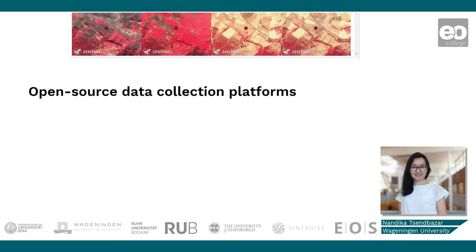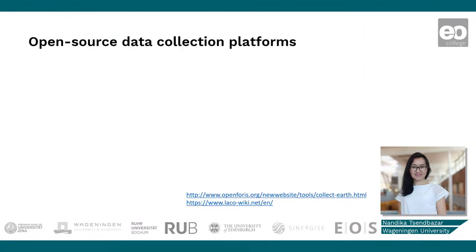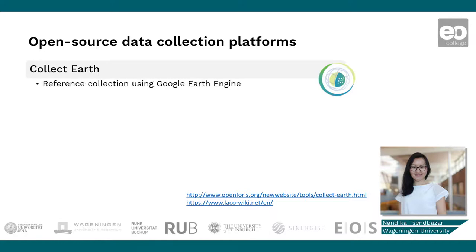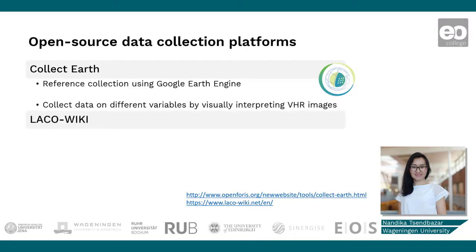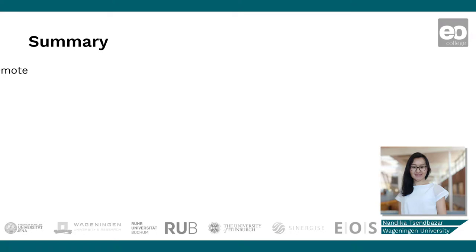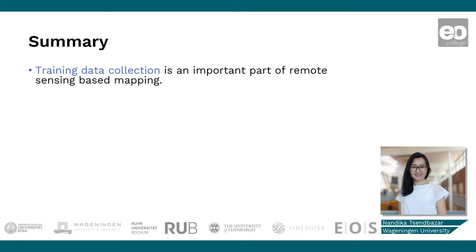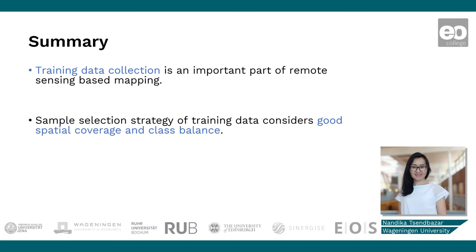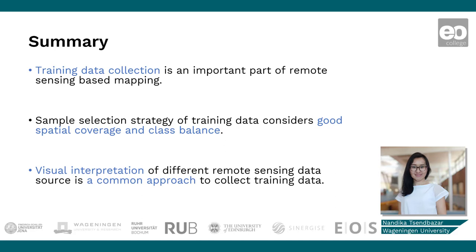There are also open source platforms that give easy access to different remote sensing data that can be used for interpretation. For example, the Collect Earth platform gives access to very high resolution images through Google Earth Engine. Another platform is LACO-Wiki, which gives similar access and also allows automated sample generation based on the data you provide. To summarize, today we discussed training data collection for remote sensing based classification. We saw that the sample selection strategy considers good spatial coverage and class balance, and we also saw visual interpretation as a common way to collect training data.